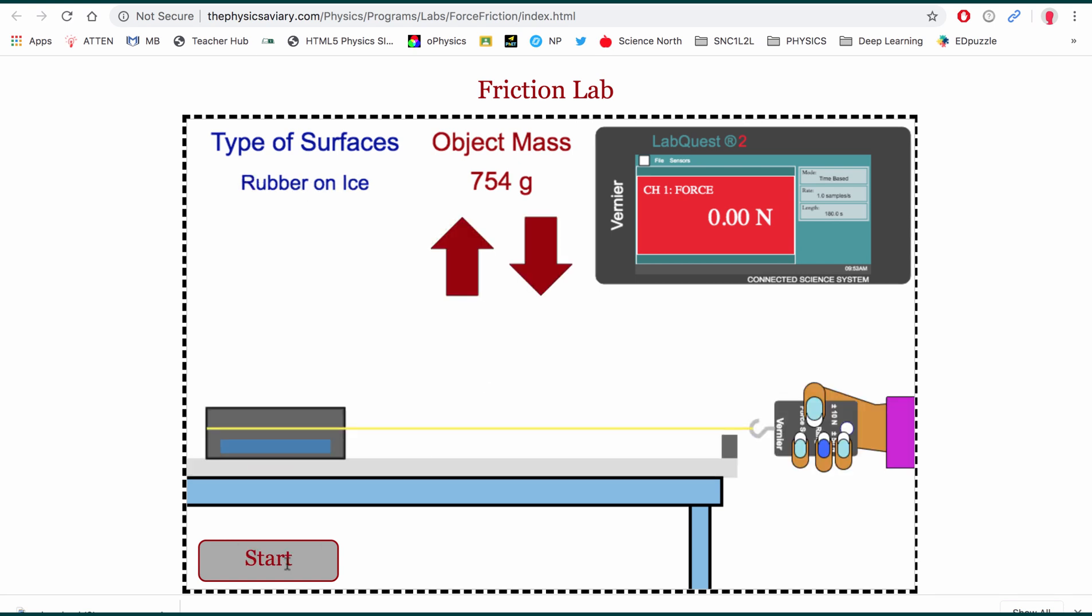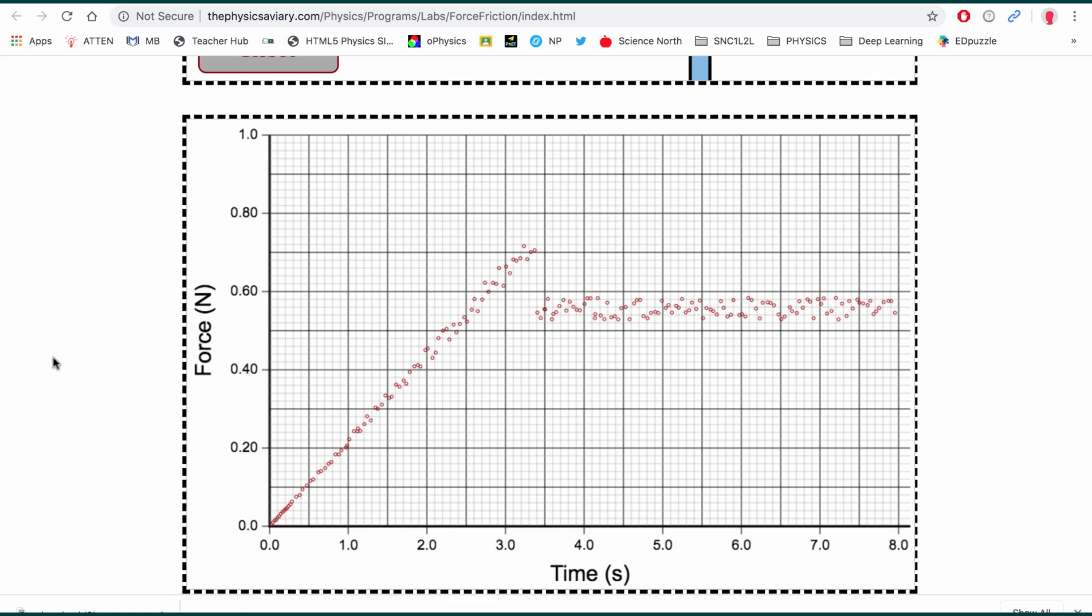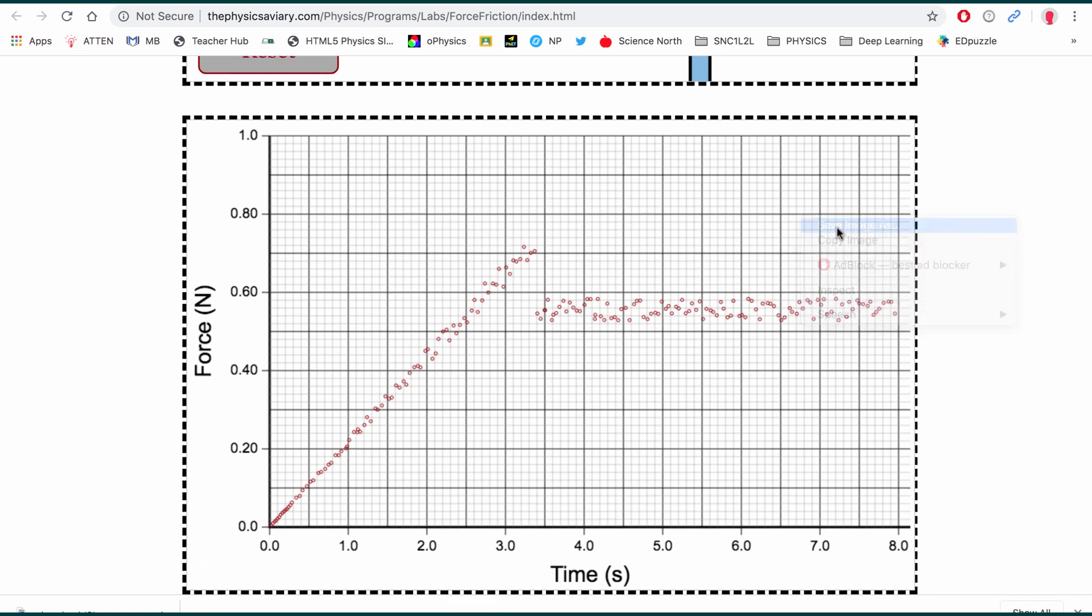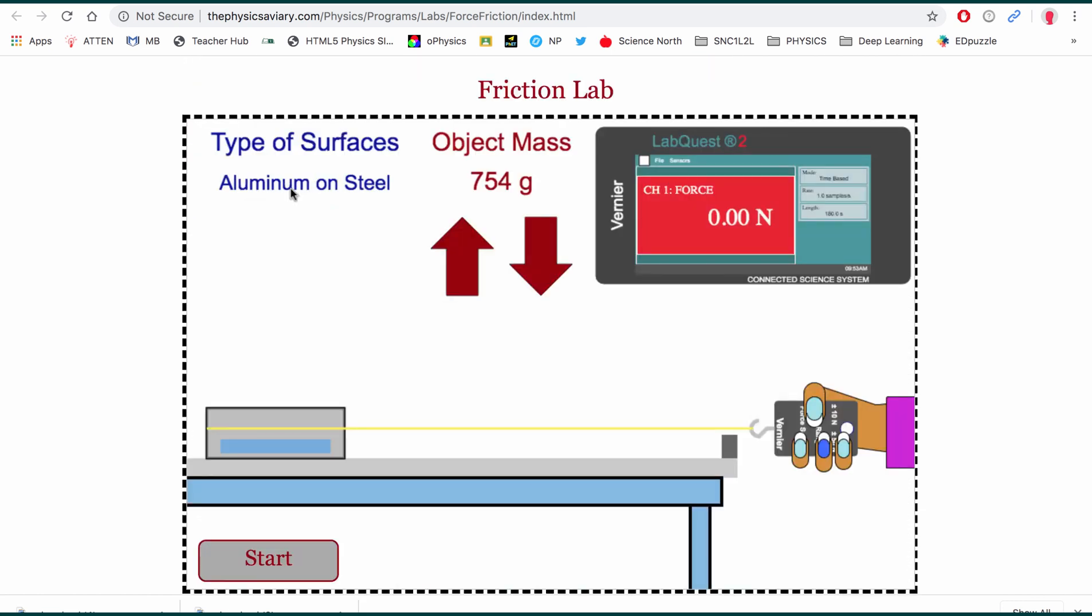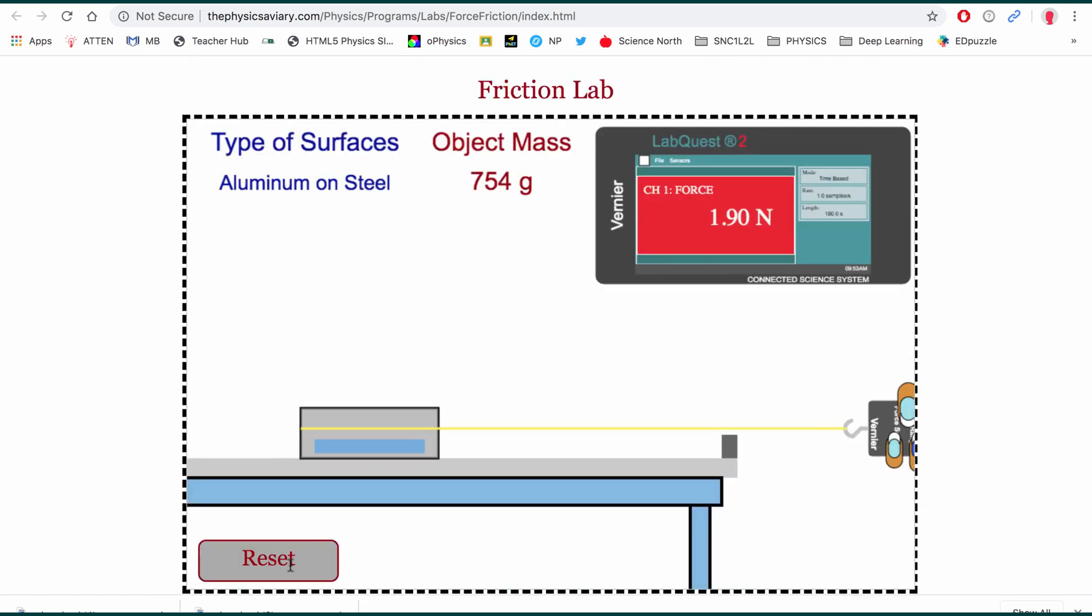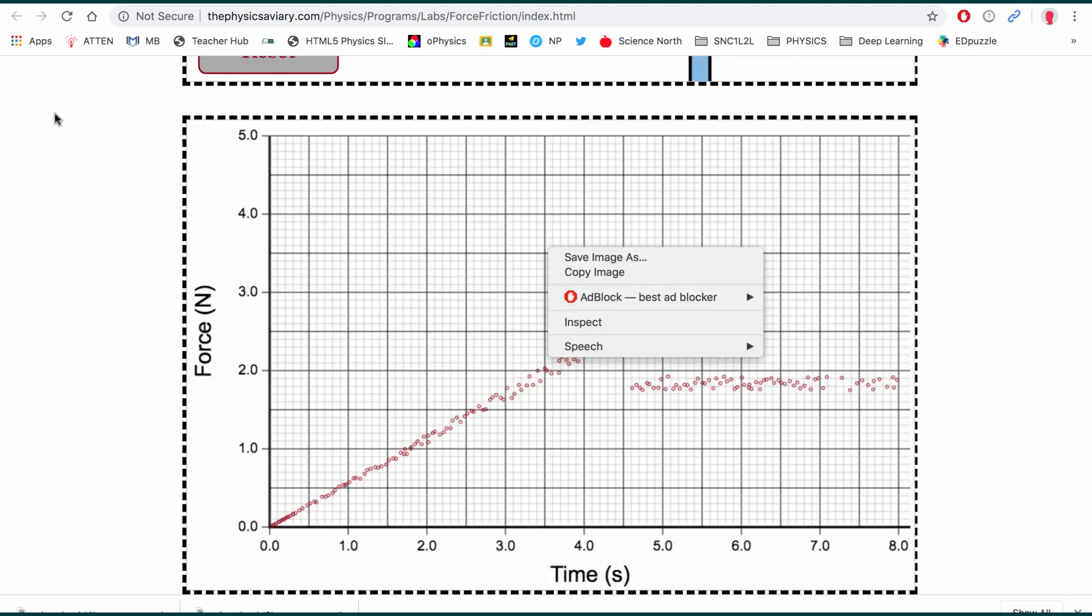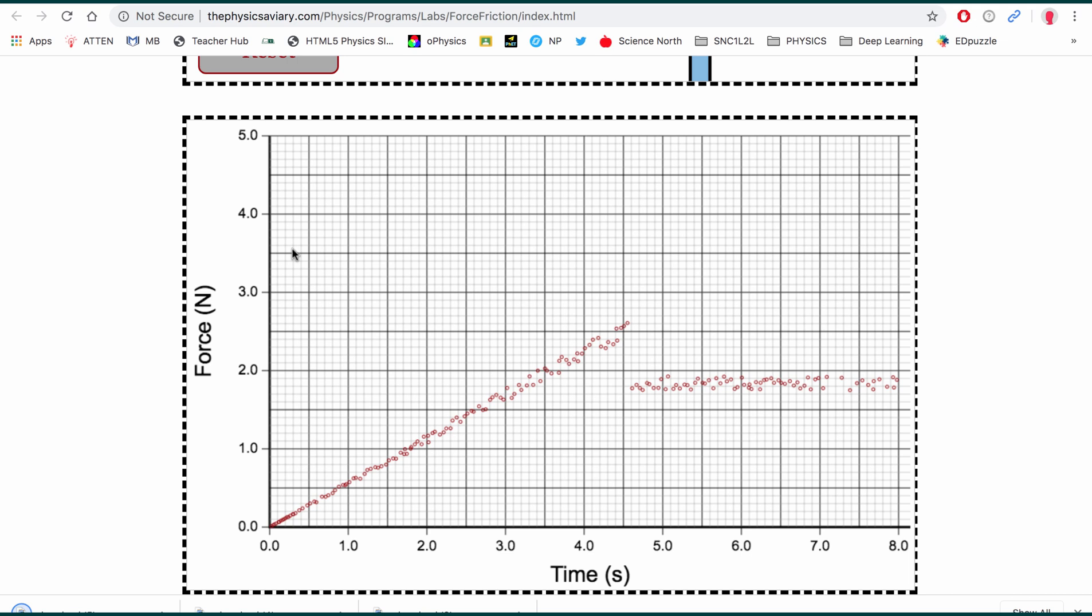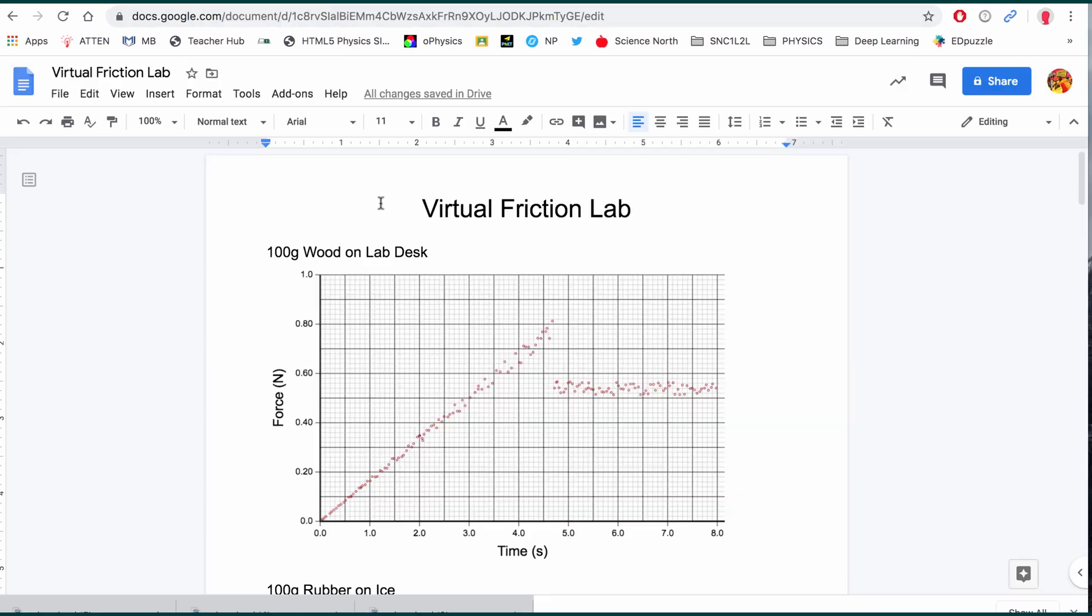Let's now go with rubber on ice and click start. Here's our graph. Save as 754 grams rubber on ice. And our last one is going to be aluminum on steel. And here's our last graph. Let's save it as 754 grams aluminum on steel.